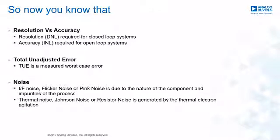1/f noise, flicker noise, or pink noise is due to the nature of the component and impurities of the process. There is no general equation to define this noise, whereas thermal noise, Johnson noise, or resistor noise is generated by the thermal electron agitation — this type of noise is proportional to the resistance of the DAC. Glitch duration is usually very short and faster than the system response time to settle, so its impact is minimal.